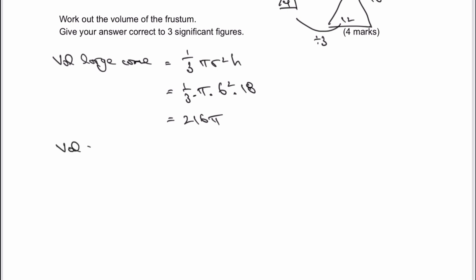Let's look at the volume of the small cone. We'll use the same formula: one-third π r² h. The information I'm putting in is one-third multiplied by π.